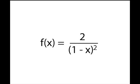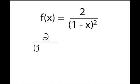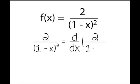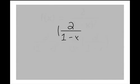Let's do one last example. Example 4. F of x equals 2 over parentheses 1 minus x squared. This one requires a bit of knowledge on differentiation. You have to notice that this function is actually the derivative of 2 over 1 minus x. If you're not sure how, let me show you.